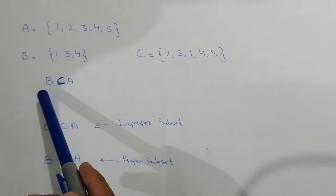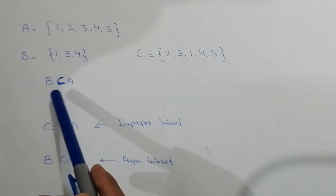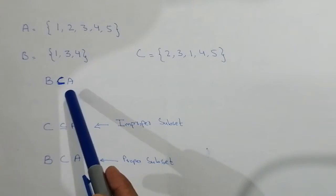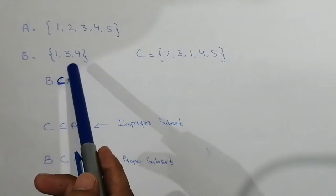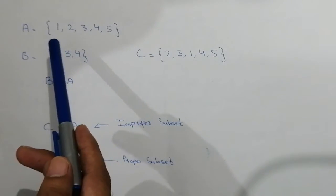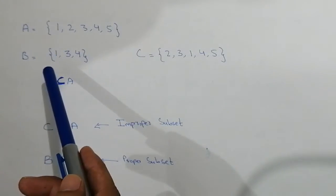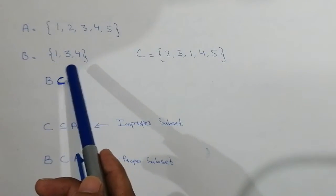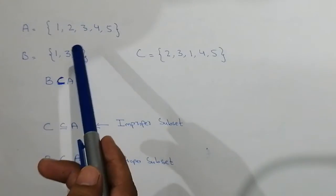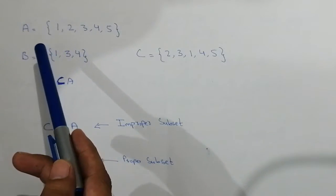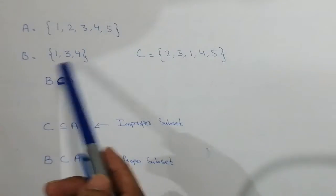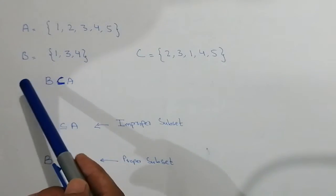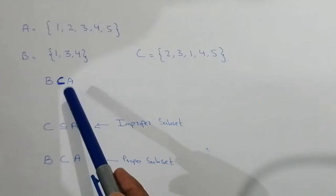But if you look over here, B is a proper subset of set A. Why? Because the elements present in set B are present in set A, but in set B one or more than one elements are lesser than set A. So we can say that B is the proper subset of set A.